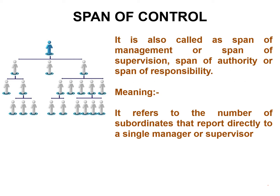Let us discuss the meaning of span of control. It is also called span of management, span of supervision, span of authority, or span of responsibility. It refers to the number of subordinates that directly report to a single manager or supervisor, and that a manager can effectively manage and supervise.